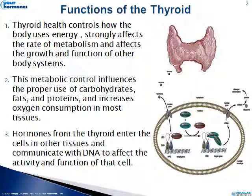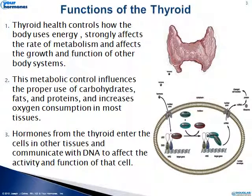When we talk about the functions of the thyroid, first and foremost, we all recognize that it affects the metabolic rate — how much we burn calories. We need to also recognize that it affects the growth and function of other body systems. Metabolism isn't just burning calories; it's tissue functioning properly. The thyroid hormones influence how we use carbohydrates, fats, and proteins, and it also affects oxygen consumption in most tissues. One of the most important considerations is that thyroid function happens at the cellular level.